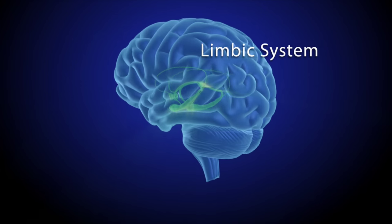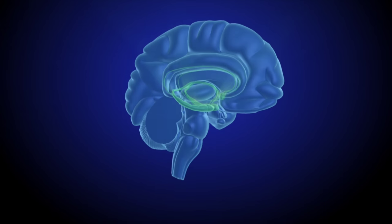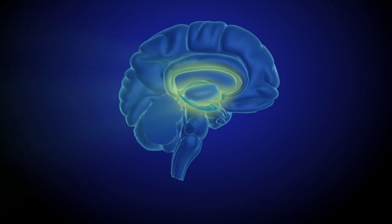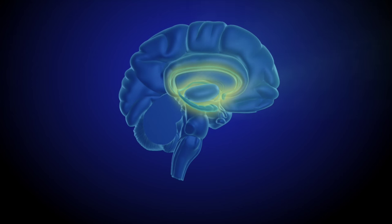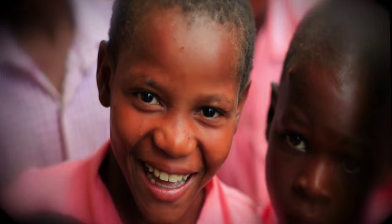Deep within the brain is a set of structures called the limbic system. The limbic system contains the brain's reward circuit or pathway. The reward circuit links together a number of brain structures that control and regulate our ability to feel pleasure.